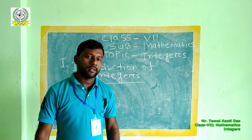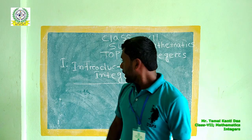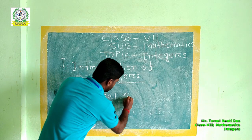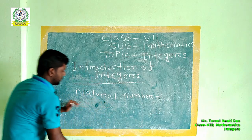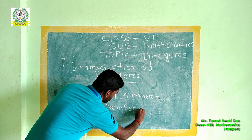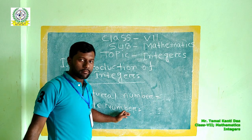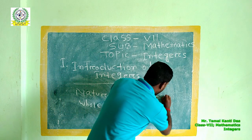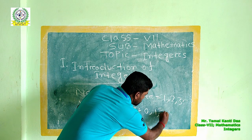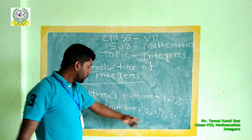Earlier I think you have learnt what are natural numbers and what are whole numbers. So again I am writing here natural numbers. Natural numbers will begin from 1. And the whole numbers will begin from 0. That means the numbers 1, 2, 3 are all natural numbers. And the whole numbers 0, 1, 2, 3 are all whole numbers. The smallest natural number is 1 and the smallest whole number is 0.